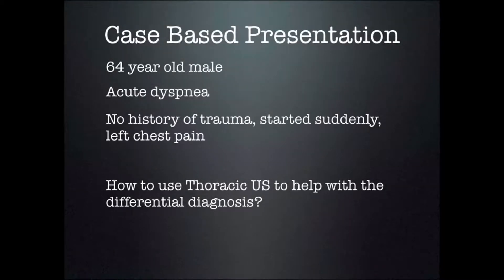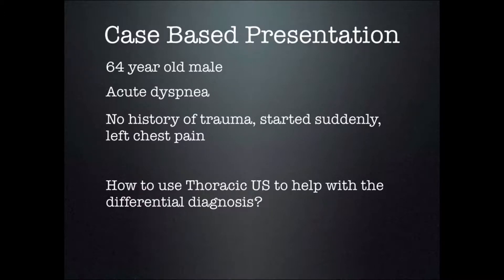A 64-year-old male has come in for your evaluation. He is acutely short of breath, has no history of trauma, it started suddenly, and he's complaining of left-sided chest pain. So how do we want to use thoracic ultrasound to help with the differential diagnosis in this patient?